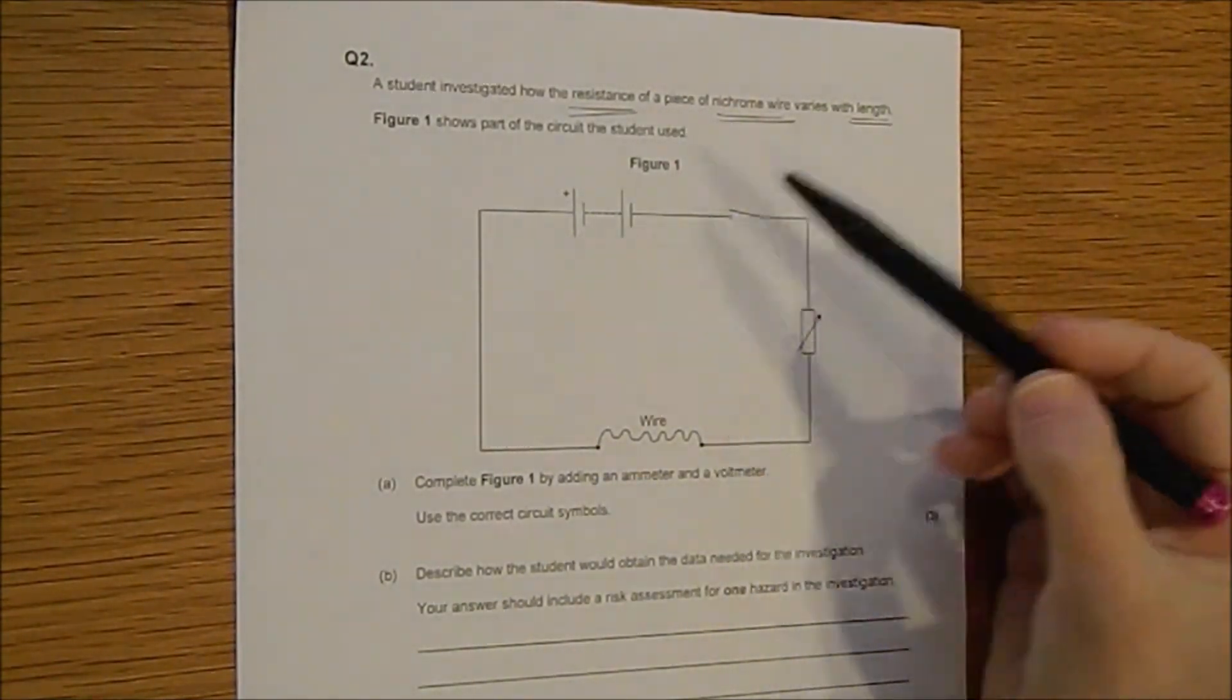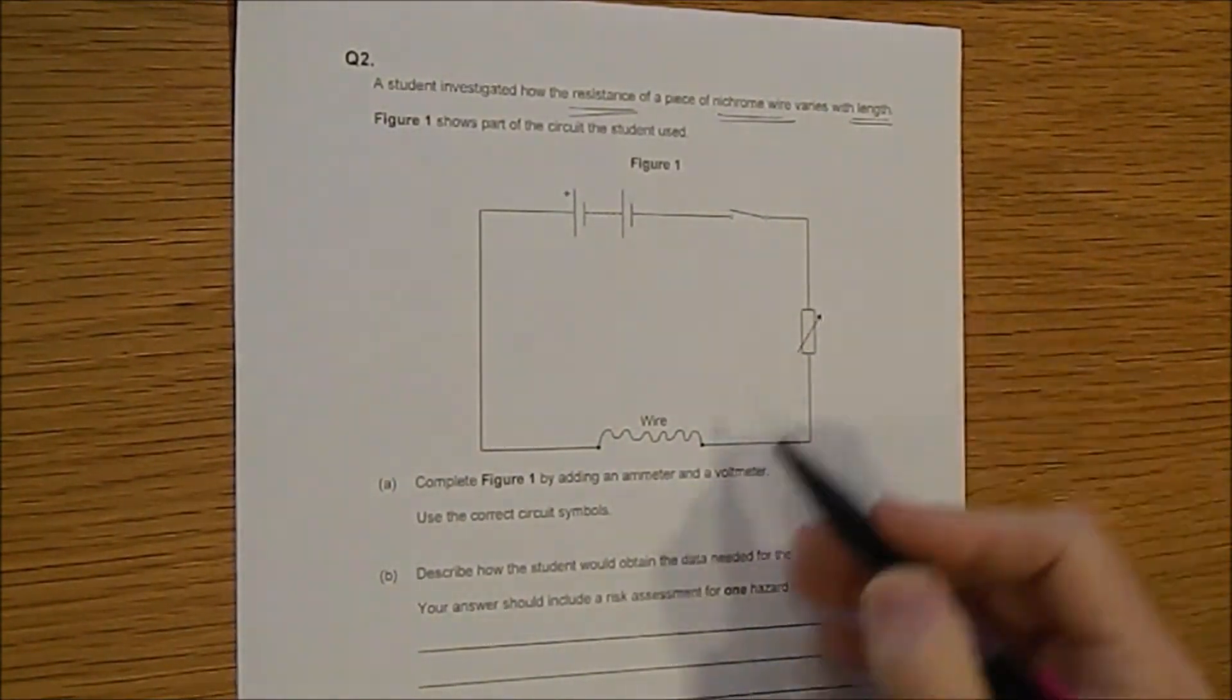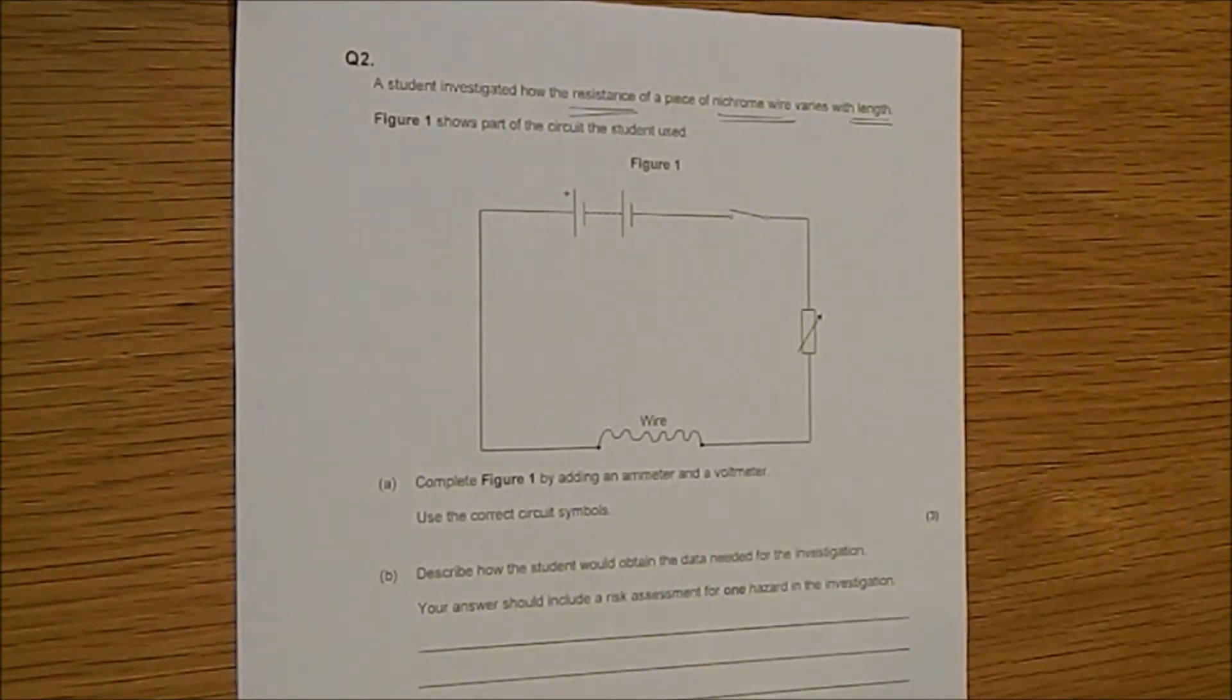So we've got a battery, a switch, a variable resistor and the piece of wire all in a series circuit.